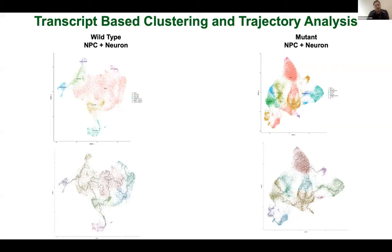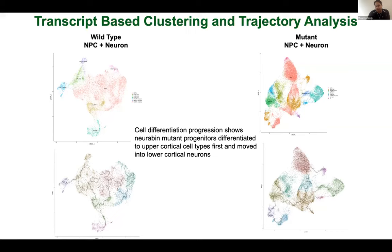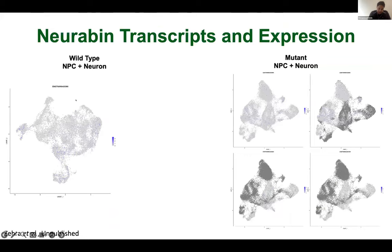Differentiation progresses from NPCs to higher cortical layer neurons, then moves into lower cortical layer neurons — L2, L4 — which differentiate first, then lower cortical neurons in mutant lines. We don't see that in wild-type cells. This differential progression with the neurobin mutated gene gives us an idea that it will produce a very different organization of neurons in different cortical plates compared to control individuals. Looking at neurobin transcript expression between wild type and mutant — to our surprise, we see only one transcript in wild type.